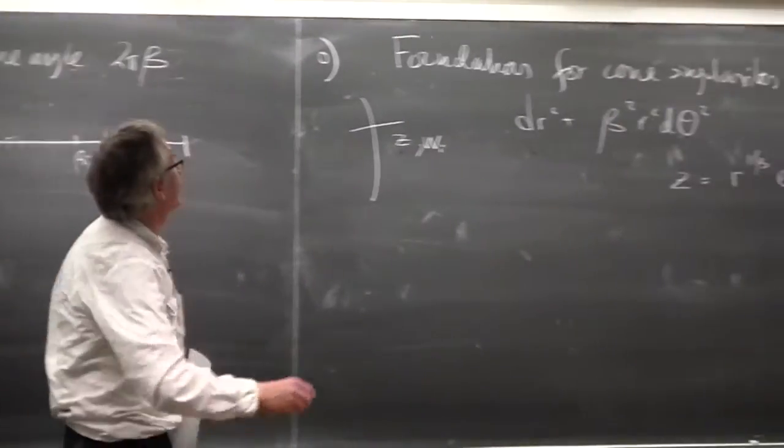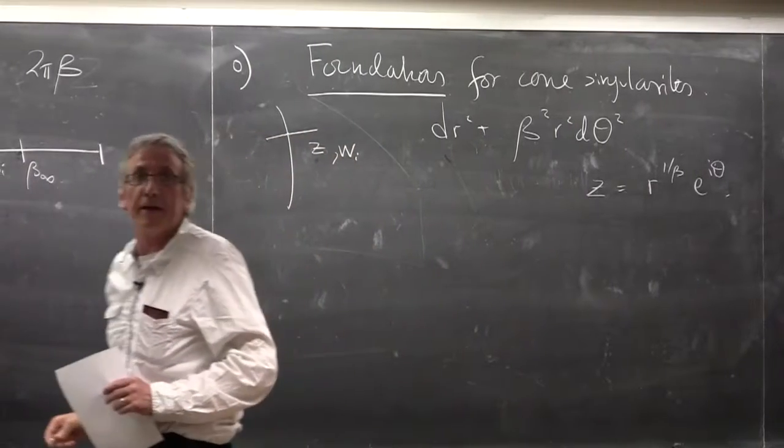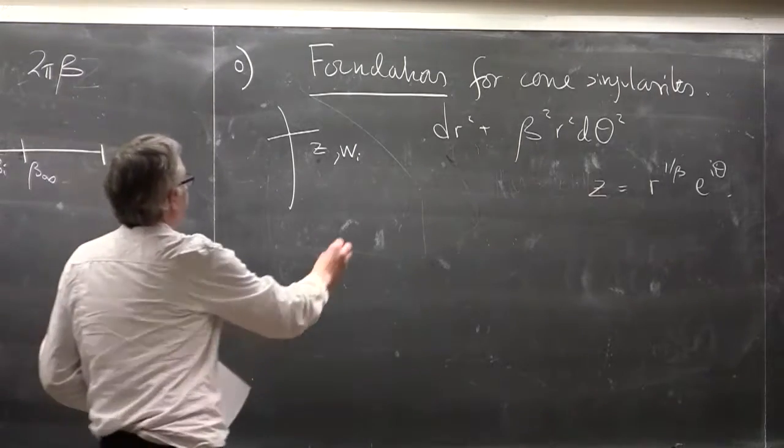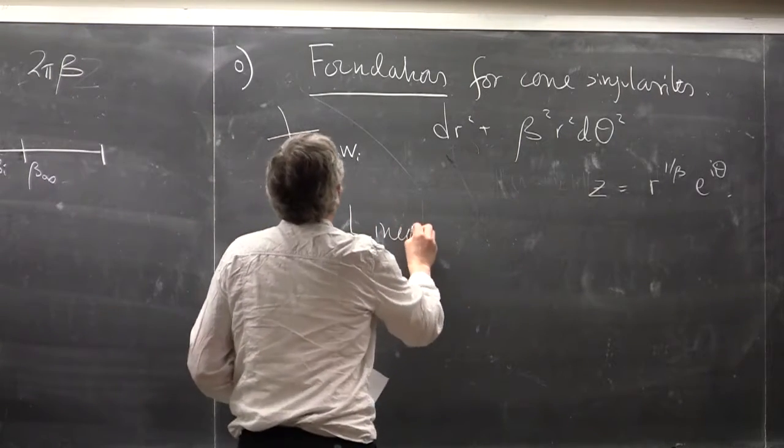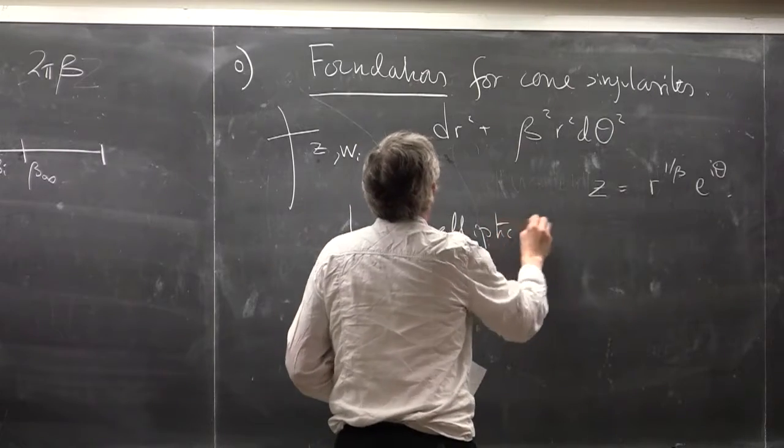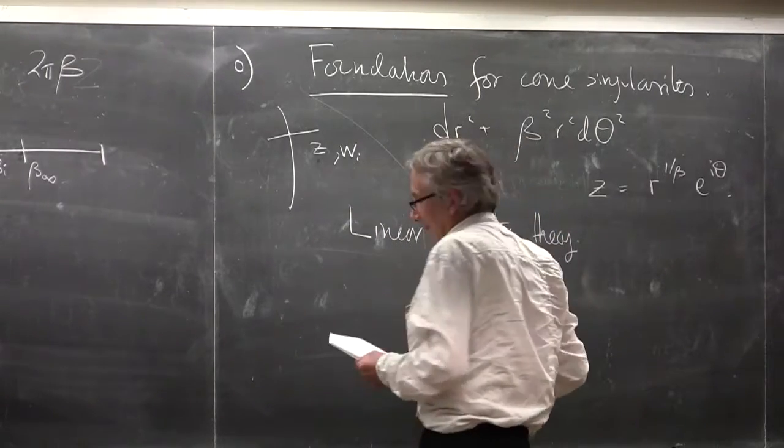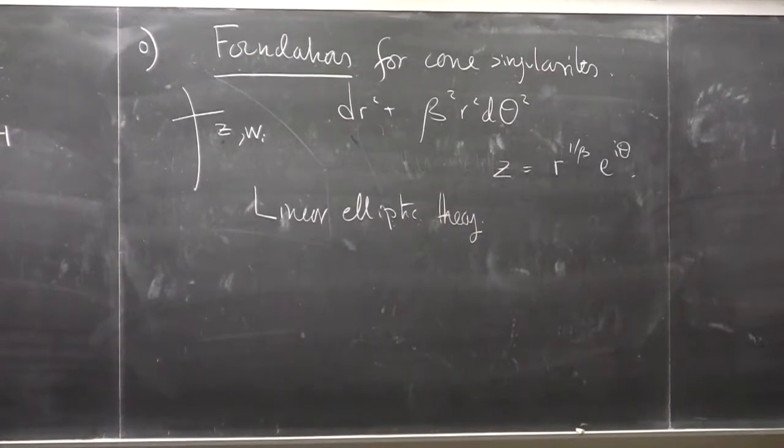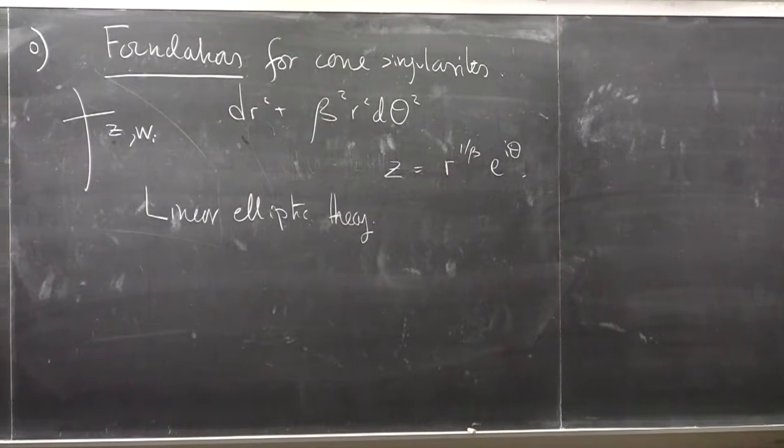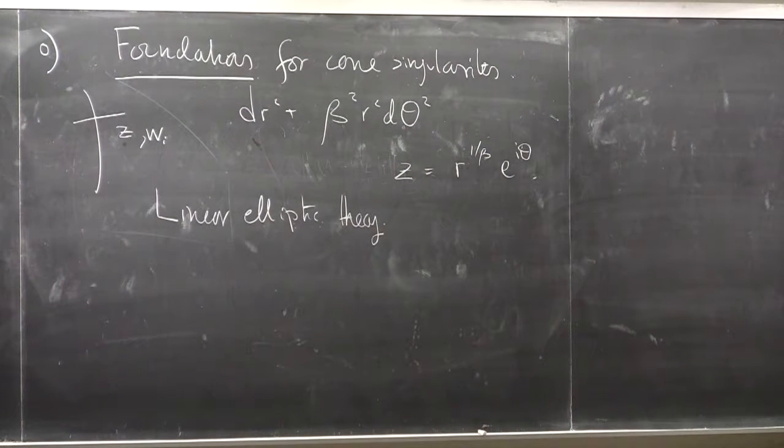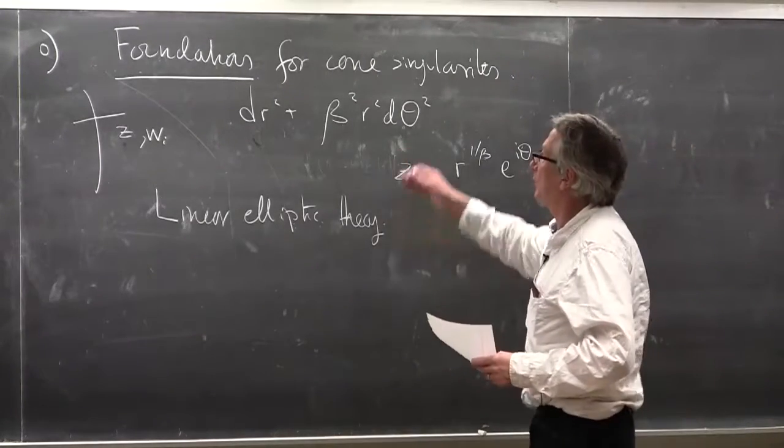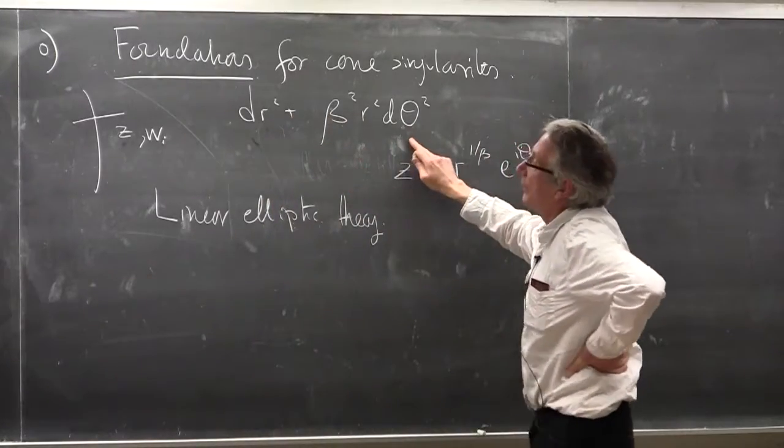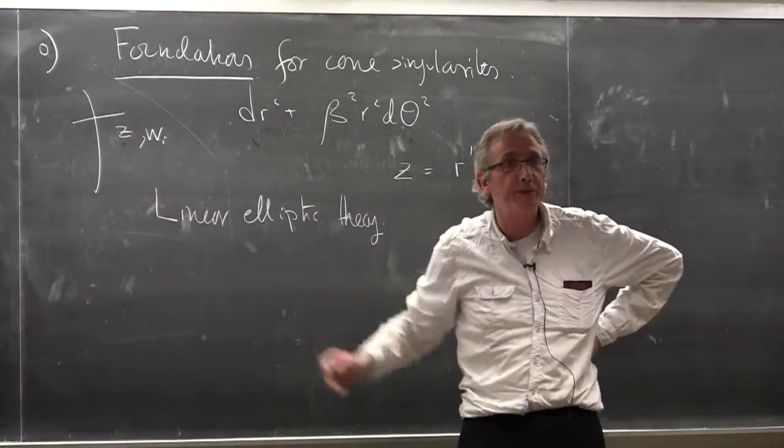What I mean by the foundations is that we want to set up an analog of the usual linear elliptic theory. Just as when you do the usual analysis of manifolds, you start off with the flat case and then treat the general case by perturbing about that. We can start off treating the flat case where we have a standard cone times a Euclidean factor, the w variable.